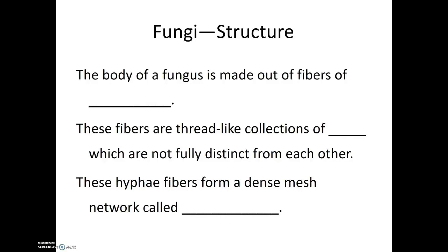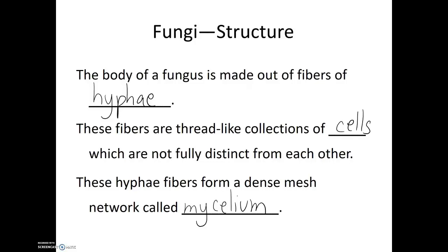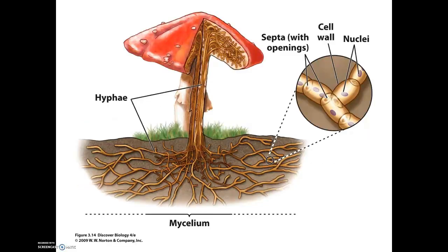The body of a fungus is made out of thin fibers known as hyphae. These fibers are thread-like collections of cells which, while separate from each other, have openings between them allowing for the movement of organelles — even the nucleus — from one cell to another. These hyphae fibers form a dense mesh network known as mycelium, which makes up the body of the fungus. Here we see a diagram where the mushroom is the fruiting body, and we can see its body is made up of hyphae densely connected together into mycelium.